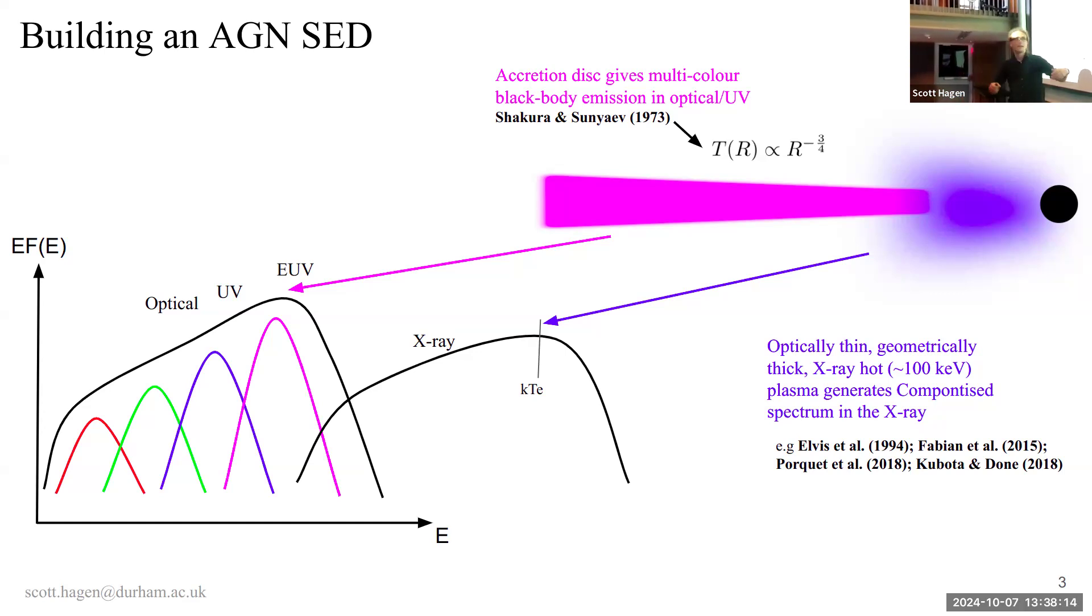And so integrating over the disk, you build up an SED, which is essentially a multicolored black body, or a sum of black body components, which for AGN tend to predict a peak in the extreme ultraviolet. However, AGN also always show X-ray emission, and you cannot create this with a standard disk in these systems, they're much too cold. And so you do need an additional component.